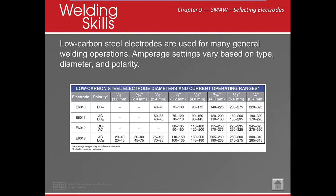Let's talk about how to estimate amperage — this involves a little math. The average diameter electrode is 1/8 inch. To convert that to a decimal, divide 1 by 8, which gives you 0.125. Knock off the decimal point and you get 125 — you can ballpark your amperage at 125 amps for a 1/8-inch electrode.